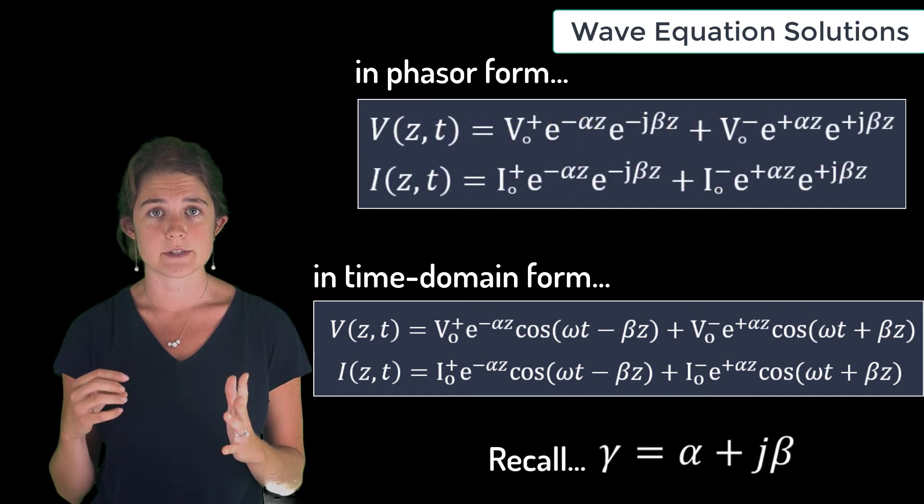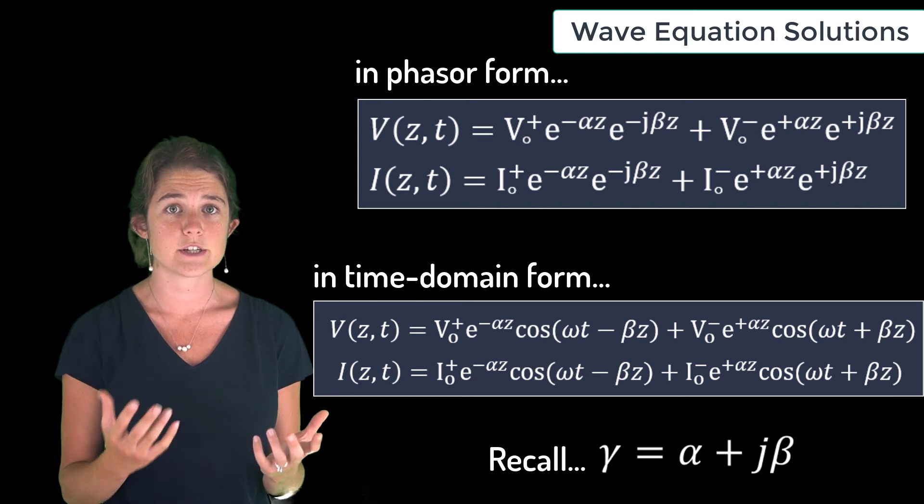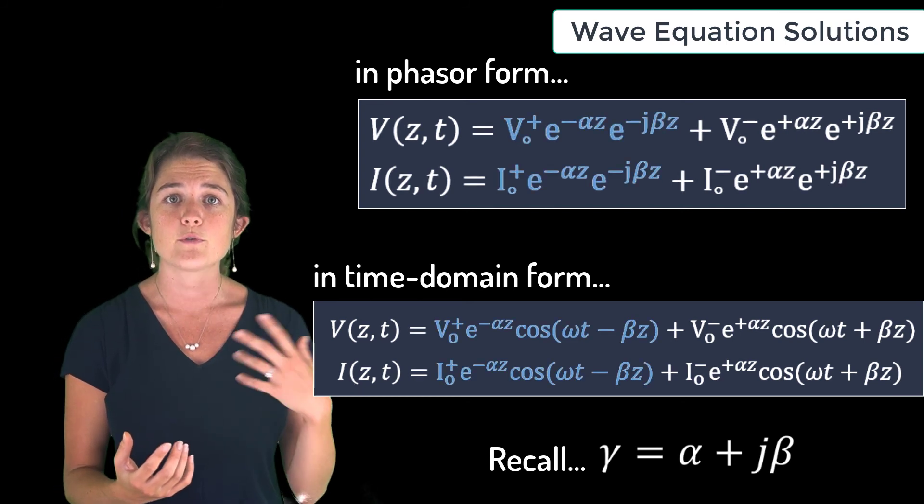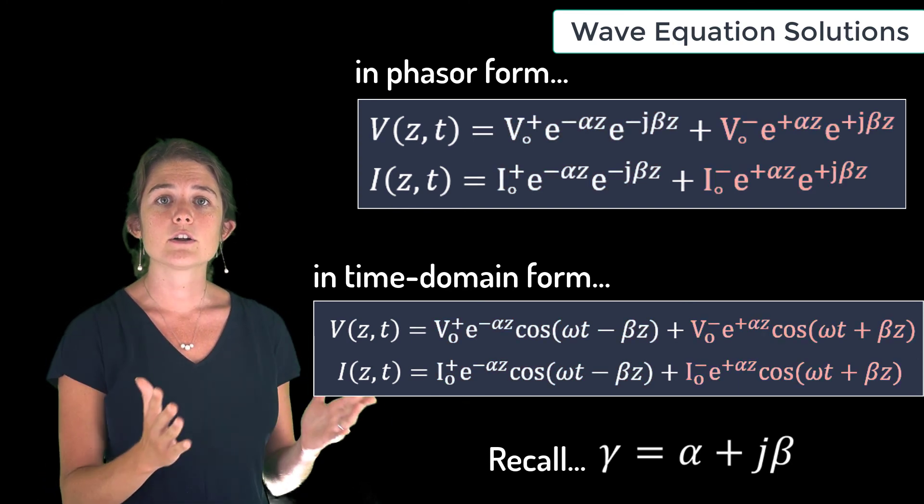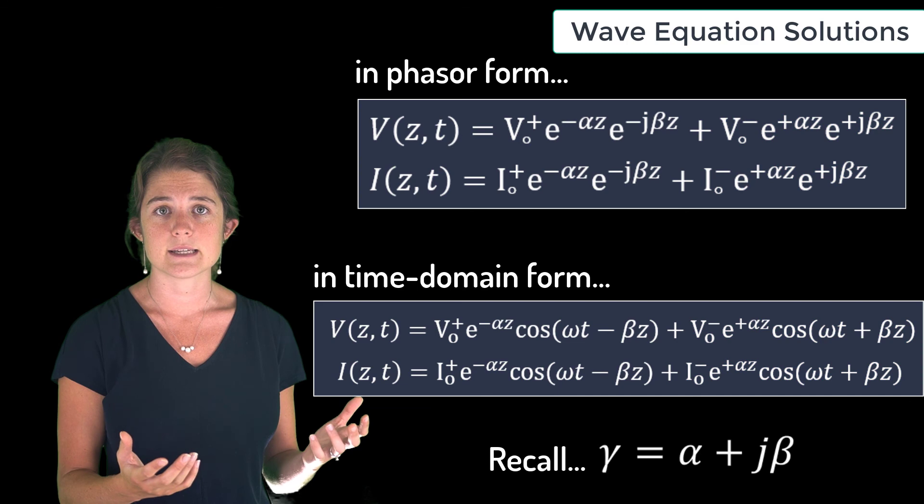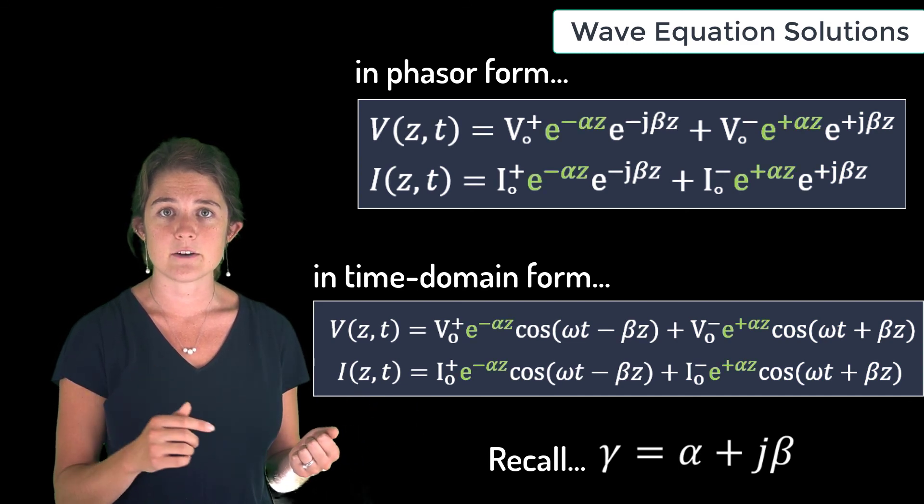So the solutions to the wave equations for voltage and current along a transmission line include both forward propagating and backward propagating components, and all components consist of harmonics that decay exponentially with propagation according to e^(-αz).